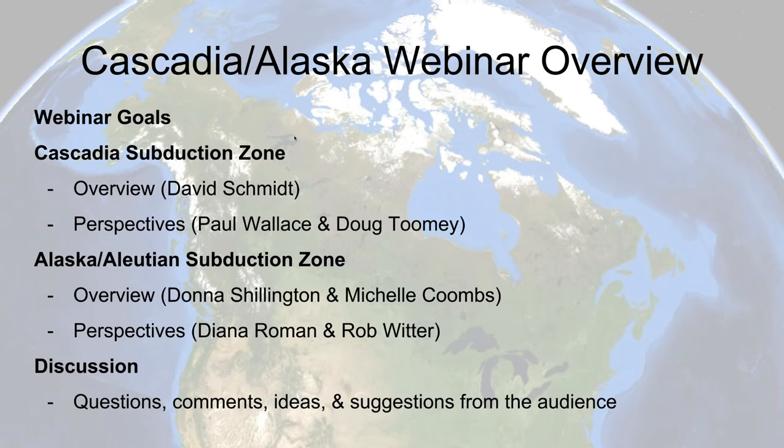Today's outline: I'll provide a brief overview of the Cascadia Subduction System and highlight potential scientific questions. This will be followed by short perspectives from Paul Wallace and Doug Toomey from the University of Oregon. Then we'll move on to the Alaska-Aleutian Subduction System, where Donna and Michelle will provide an overview, followed by perspectives from Diana Roman from the Carnegie Institution and Rob Witter from USGS Anchorage. We'll open for discussion in the final 20 minutes, and Andy will collect and organize questions submitted by the audience.